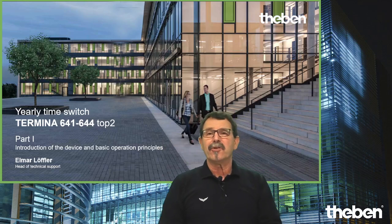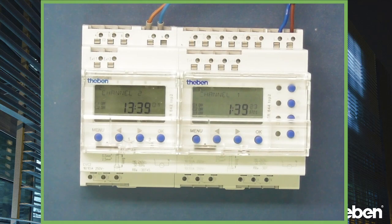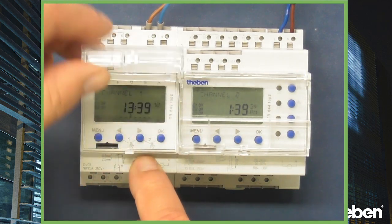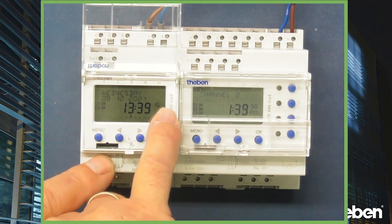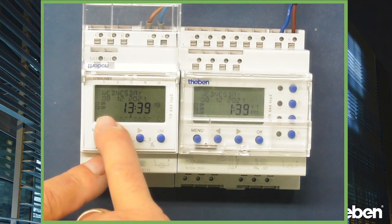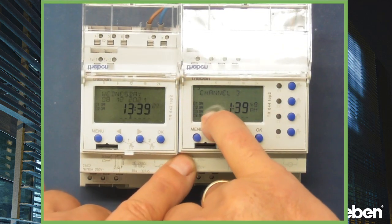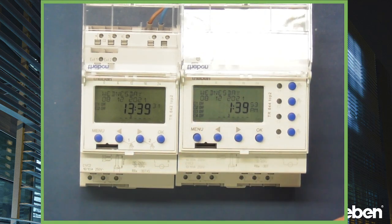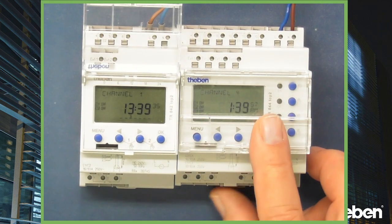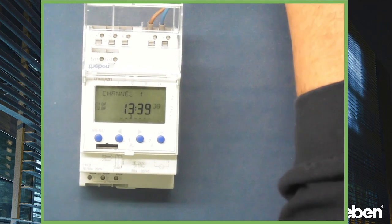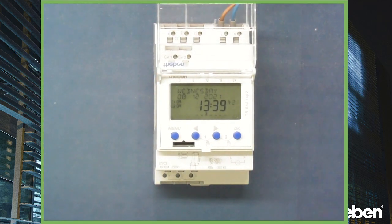The topic of today: I want to make you acquainted physically with this time switch, called TR641, TR642, and TR644. The last digit indicates how many relays - how many channels - are inside the controller. The TR642 has two channels, the TR644 has four. The operating principle of all these appliances is totally identical, so I'll use the TR642 as an example.